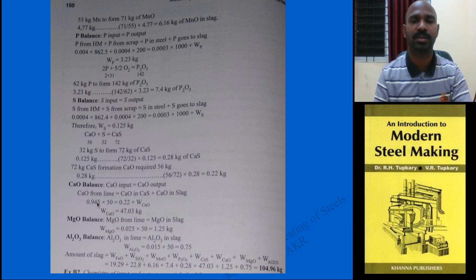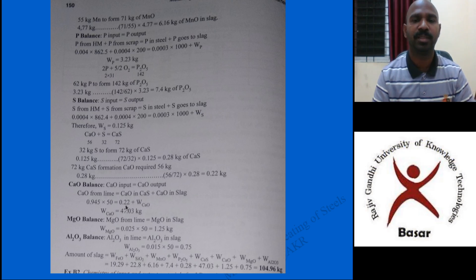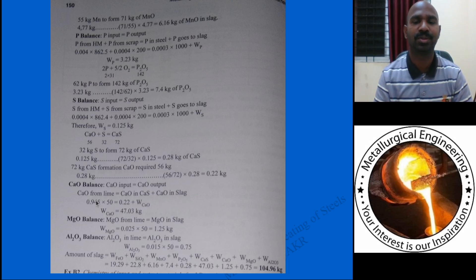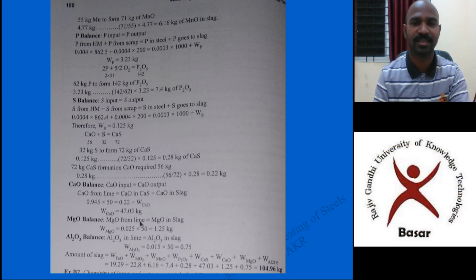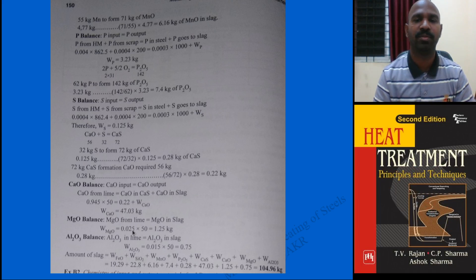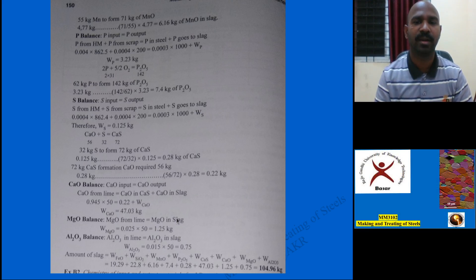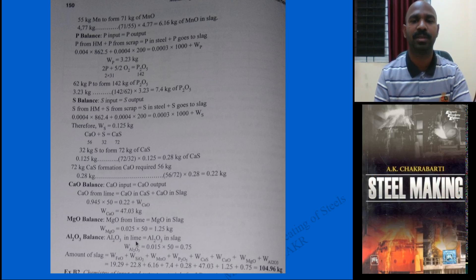The CaO fraction in lime (94.5%) multiplied by the lime weight gives CaO input. The CaO in CaS is 0.22 kg (calculated from sulfur balance using 56/72 ratio). The remaining CaO goes to slag. Similarly, MgO comes only from lime (0.025 × 50 = 1.25 kg), and this equals the MgO slag weight. Likewise, Al2O3 from lime (given fraction × 50) goes directly to slag.